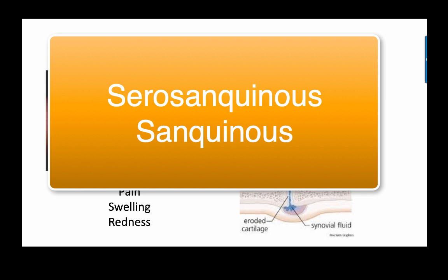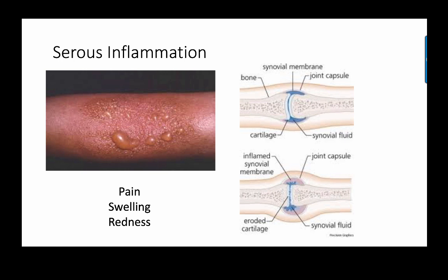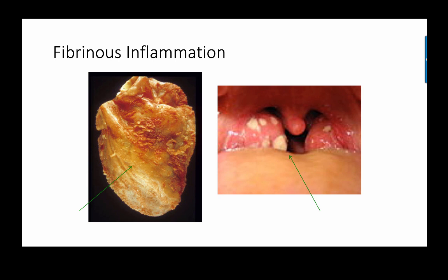You can also have serosanguinous inflammation, expected with trauma to blood vessels, or sanguineous inflammation, which is essentially bloody inflammation. If the inflammation is limited, the body can reabsorb the serous fluid. Treatments that target serous inflammation include cold therapy and anti-inflammatories such as NSAIDs — for example, ibuprofen.